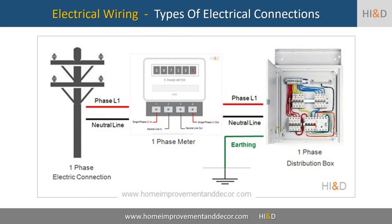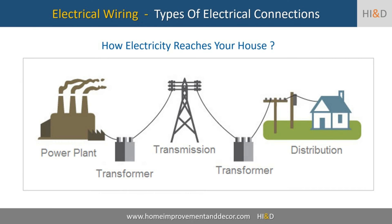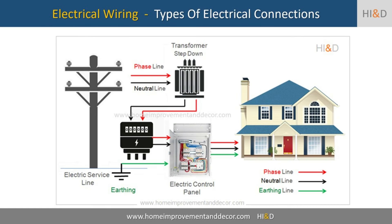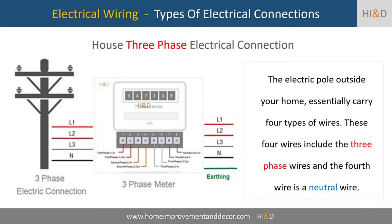The term phase is used in the context of alternating current, abbreviated as AC. The electric power generated by the power plants is sent to the destination consumer through four types of electrical cables. Out of these four cables, three cables carry the electric current and are referred to as the phase lines or live wires. In electrical jargon, the three phase lines are abbreviated as L1, L2, and L3. The fourth cable is called the neutral line.